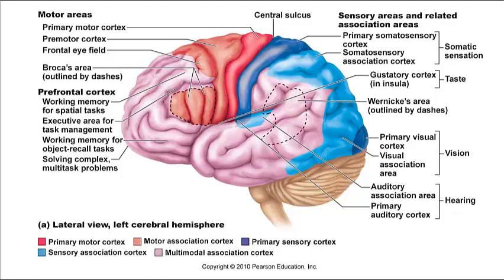There are also interpretive areas of the cerebrum. The prefrontal cortex, also called the anterior association area, is involved with intellect, complex learning, recall, and personality. This area is thought to be necessary for abstract ideas, judgment, reasoning, planning, and empathy. It follows that disability, trauma, or tumors in this area might lead to a personality disorder.